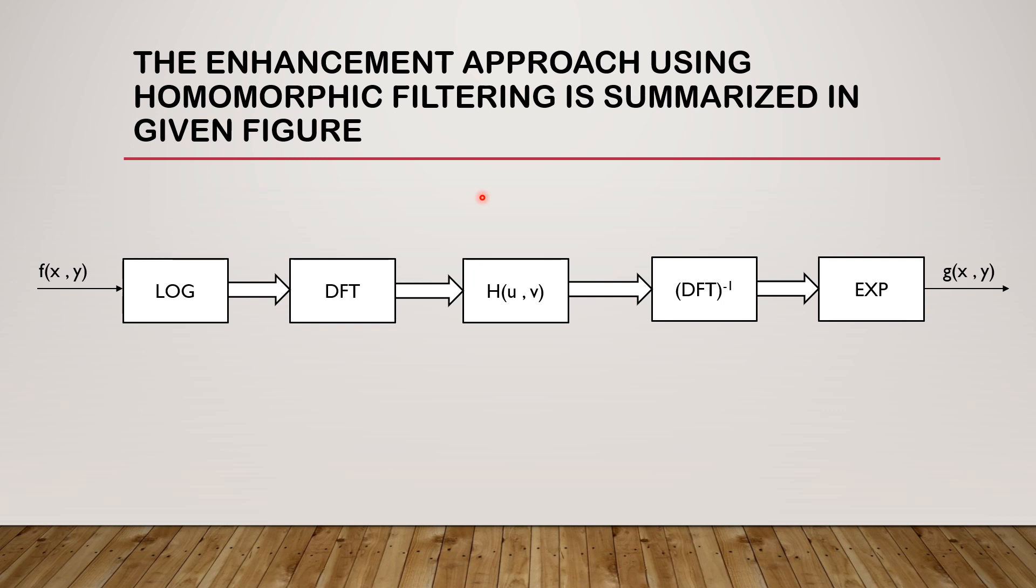The enhancement approach using homomorphic filtering is summarized in given figure because you know that homomorphic filtering is generally used for image enhancement to vary the brightness to vary the contrast, so it has numerous applications for the image enhancement in number of fields.